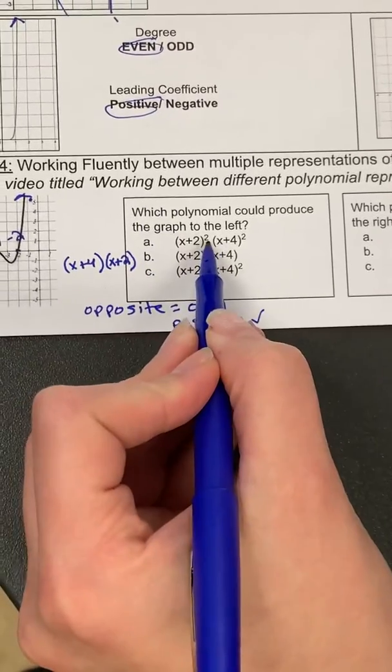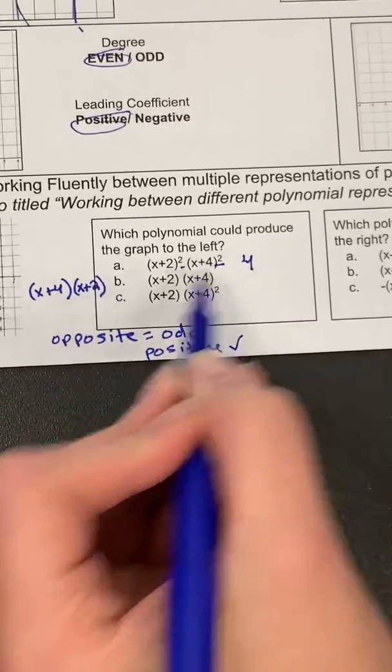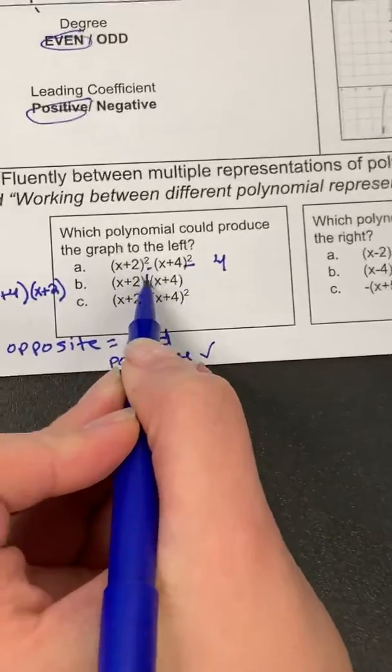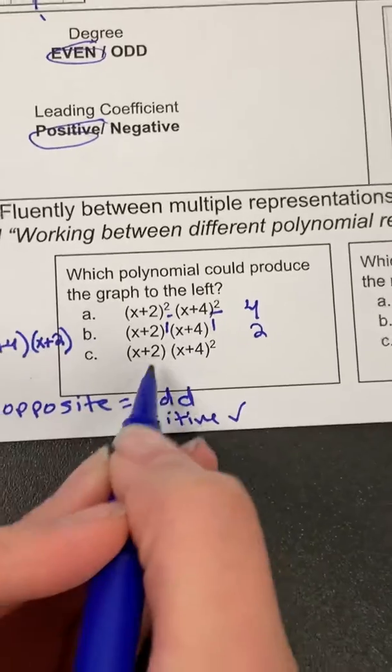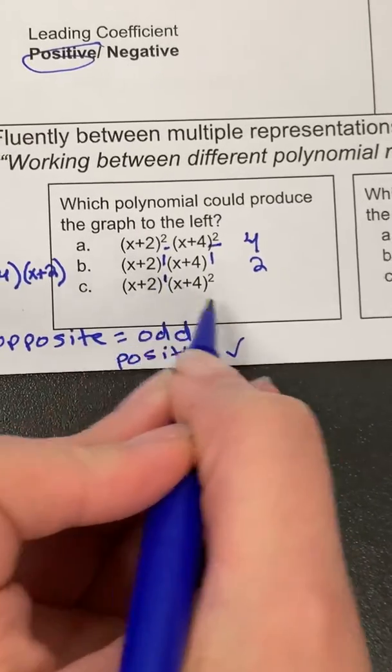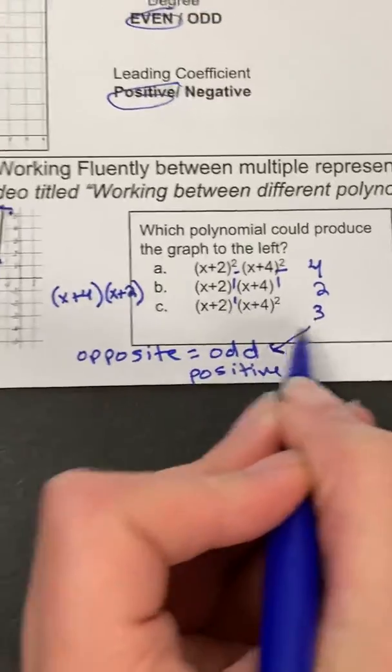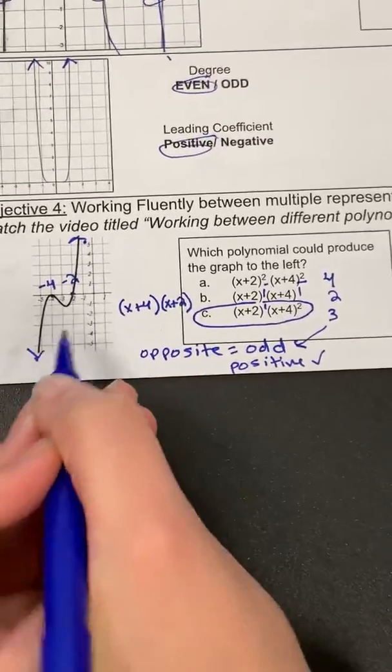Let's check my degree. So two plus two would be four. That degree is even. And if you don't see a number up high, you always assume it's one. So I have one and one. One plus one is two. That's also an even number. But this last one, I have one and two. That equals three. So three is an odd number. So that means this is the equation that's going to match this graph.